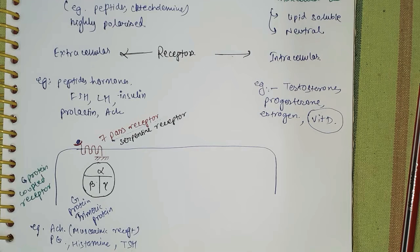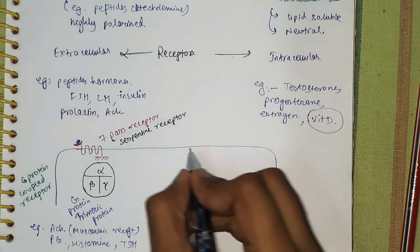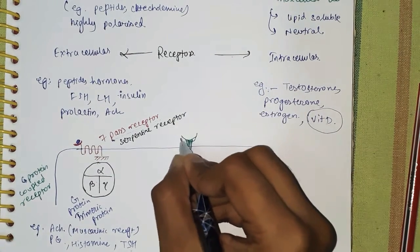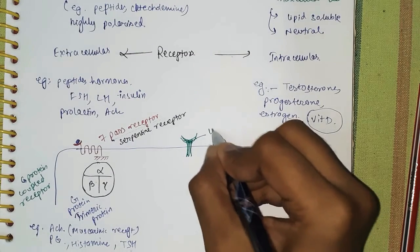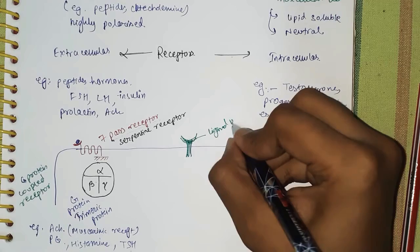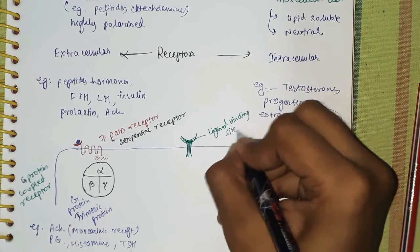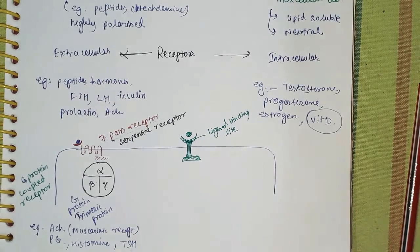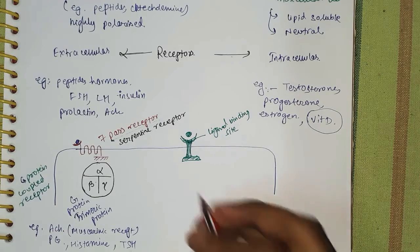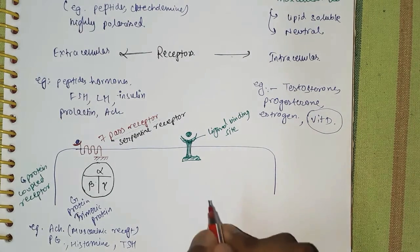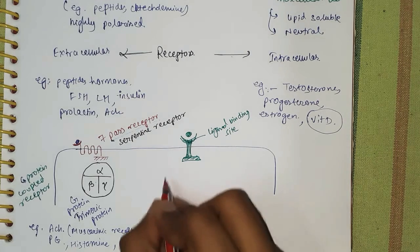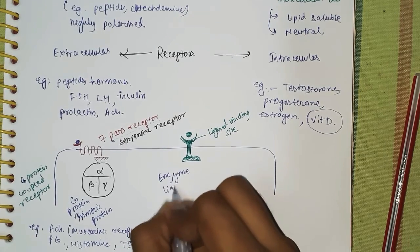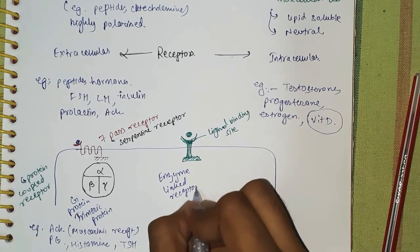The next class of receptors are one-pass receptors because they pass through the cell membrane only one time. They have a ligand binding side and an intracellular effector domain. One-pass receptors are enzyme-linked receptors.